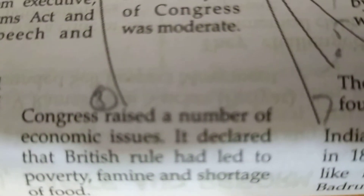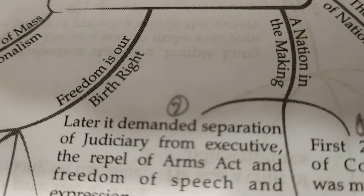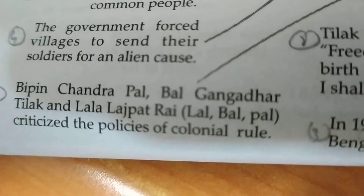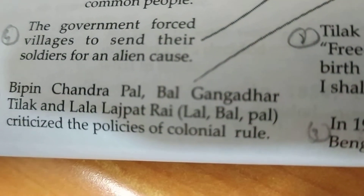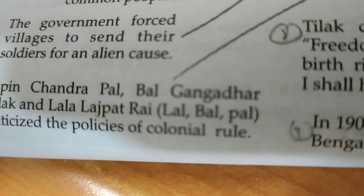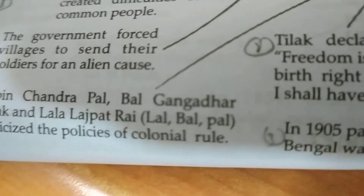Congress raised a number of economic issues. It declared that British rule led to poverty and permanent shortage of food. Because of the moderate policies of the Congress, leaders like Bipin Chandra Pal, Bal Gangadhar Tilak, and Lala Lajpat Rai were not happy with the Congress. They separated from it and criticized the policies of colonial rule.